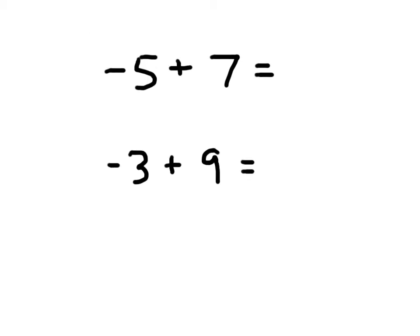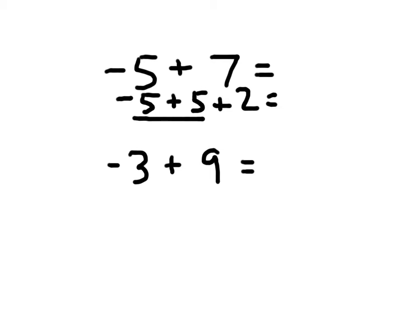So in these two instances, we have negative 5 plus 7. We know that 7 can be expressed as 5 plus 2, looking for the inverse of negative 5. The inverse of negative 5, or the opposite of negative 5, is 5. So negative 5 plus 5 plus 2 — negative 5 plus 5 cancels each other out, giving us 0. And 0 plus 2 is just 2.